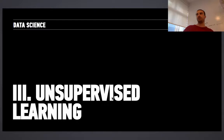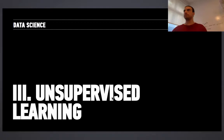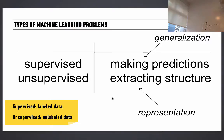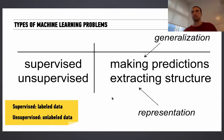Summary of supervised learning: supervised learning is about making predictions. Those predictions are either continuous — called regression — or categorical — called classification. Those are the two types of supervised learning.